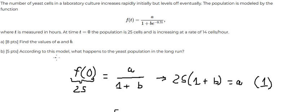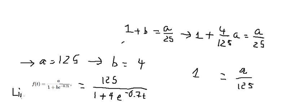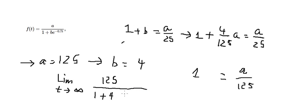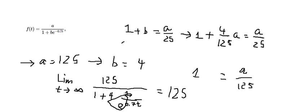Question number 2: According to this model, what happens to the population in the long run? We evaluate the limit as t approaches positive infinity. When t goes to positive infinity, the exponential term goes to zero, because 1 divided by infinity gives zero. So the maximum population is 125, since the exponential term becomes zero and we divide by 1. That is the end. Thank you for watching.